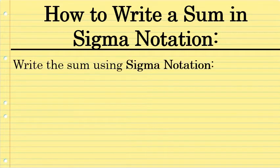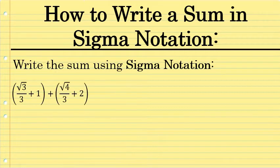Let's do an example problem where we write a long sum using sigma notation. The sum that we will write begins with the term the square root of 3 over 3 plus 1. The second term, the square root of 4 over 3 plus 2. Then the square root of 5 over 3 plus 3.